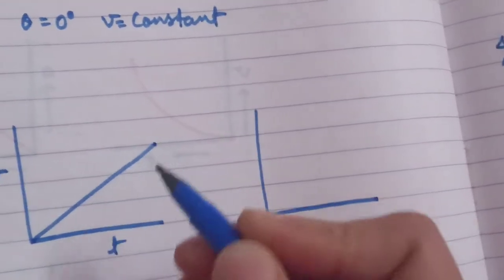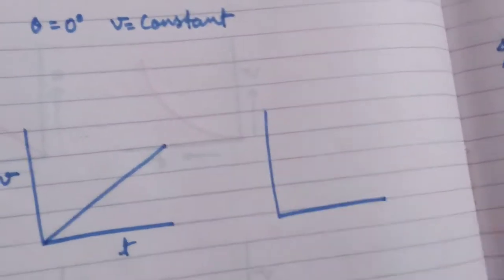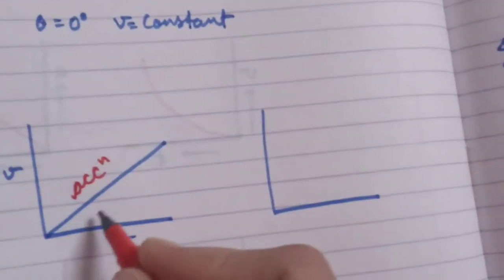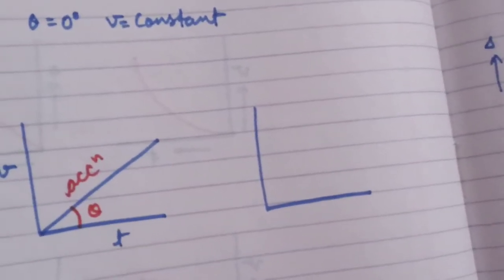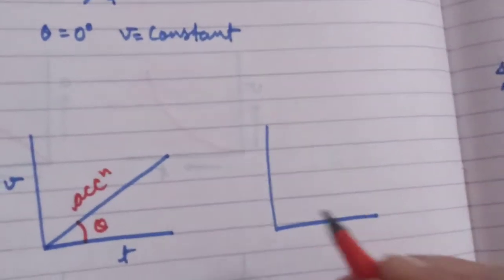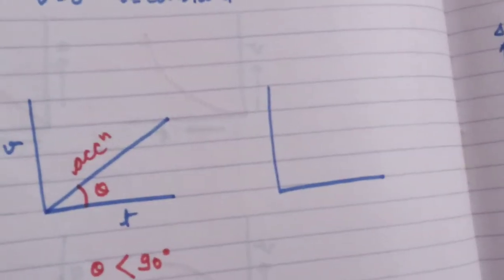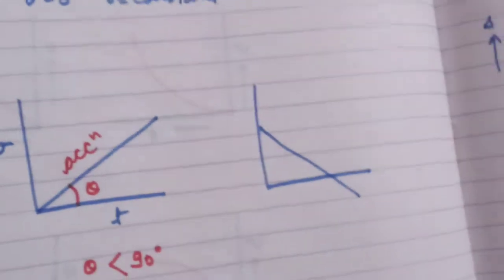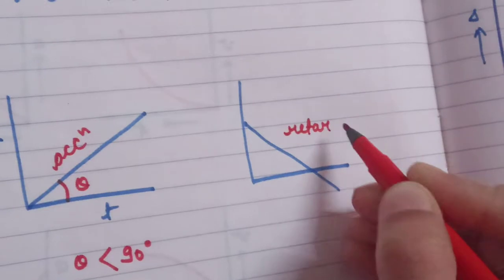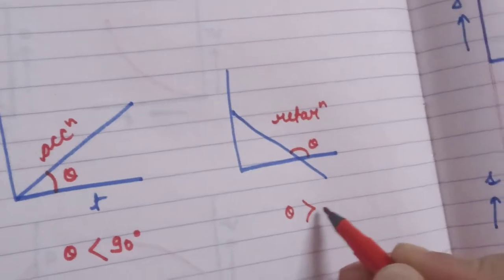For positive velocity, if velocity is increasing uniformly with time, the slope represents acceleration and theta is always less than 90 degrees. For negative velocity, if velocity is decreasing with respect to time, this represents retardation and theta is always more than 90 degrees.